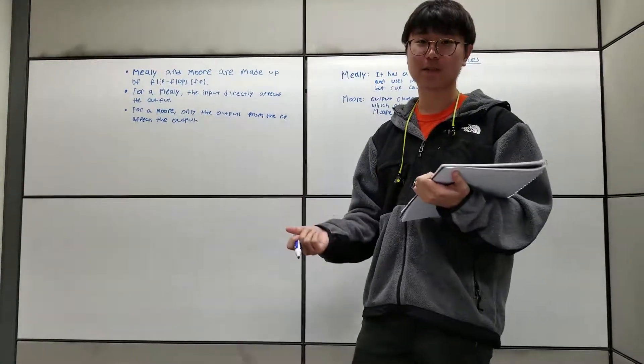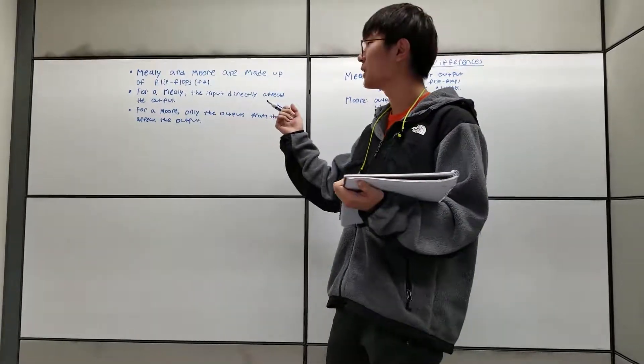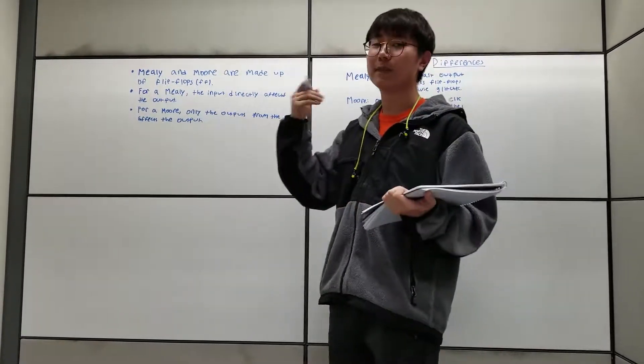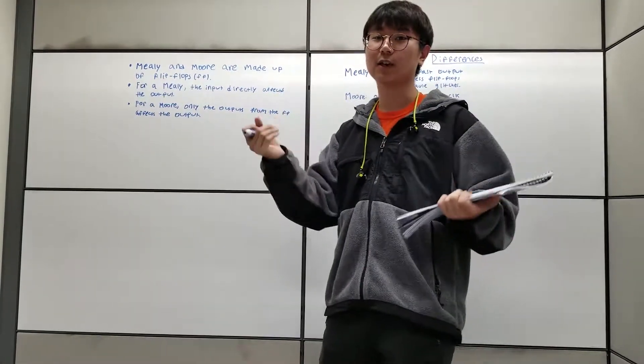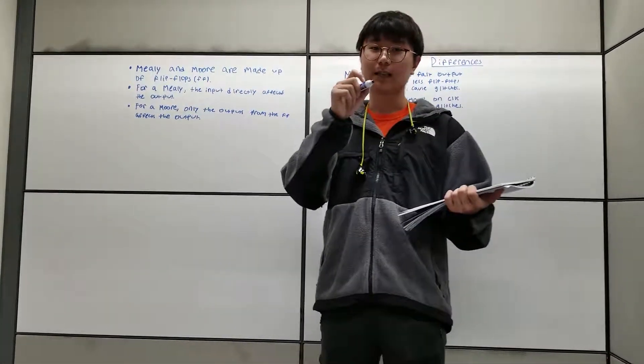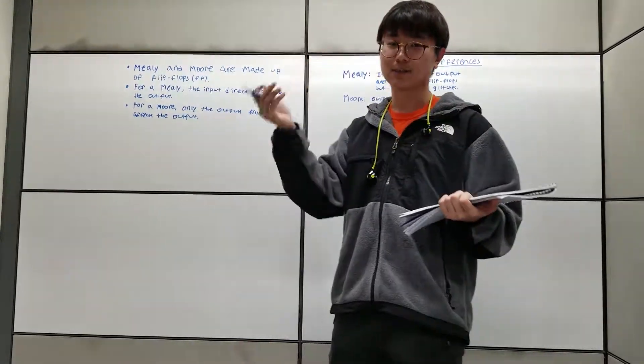Today I'm going to be talking about Mealy and Moore. Mealy and Moore are made up of flip-flops, and for Mealy, the input directly affects the outputs. So if you see a circuit diagram and the input affects the output in any way, if it goes straight to the output, then that's a Mealy.